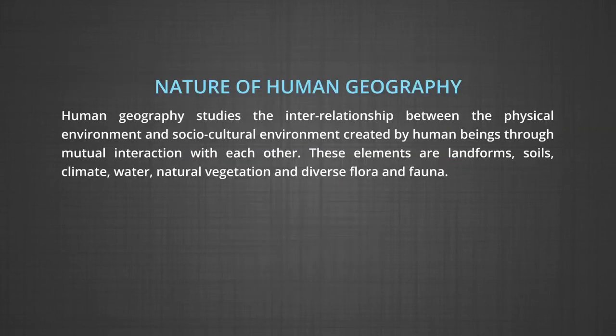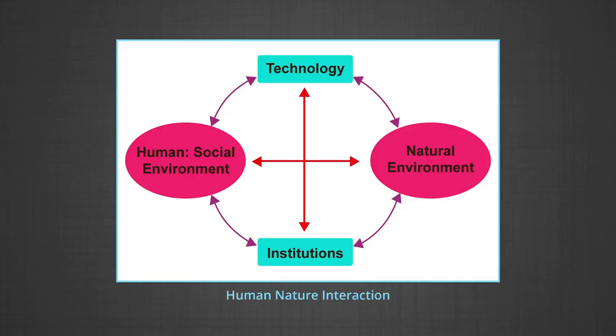Regarding the nature of human geography: human geography studies the interrelationship between the physical environment and the socio-cultural environment created by human beings through mutual interaction with each other. The elements of the physical environment include landforms, soils, climate, water, natural vegetation, and diverse flora and fauna. Now, if we make a list of elements which human beings have created through their activities on the stage provided by the physical environment,